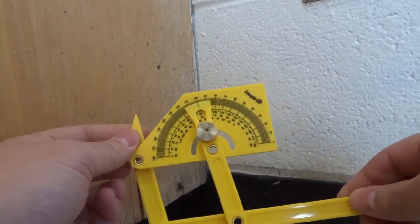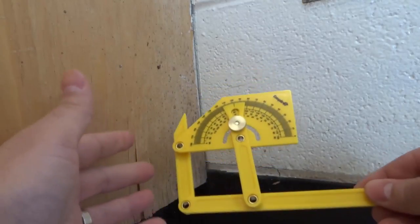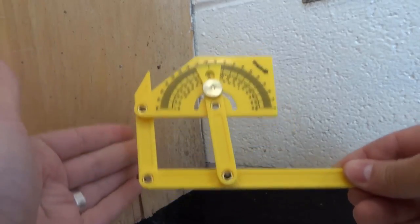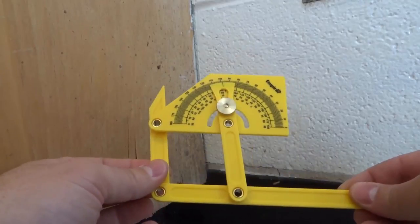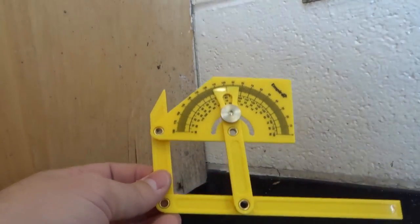And it actually holds in place so when you measure the angle you can remove the protractor angle finder from the angle spot and it's going to remain showing you the angle.